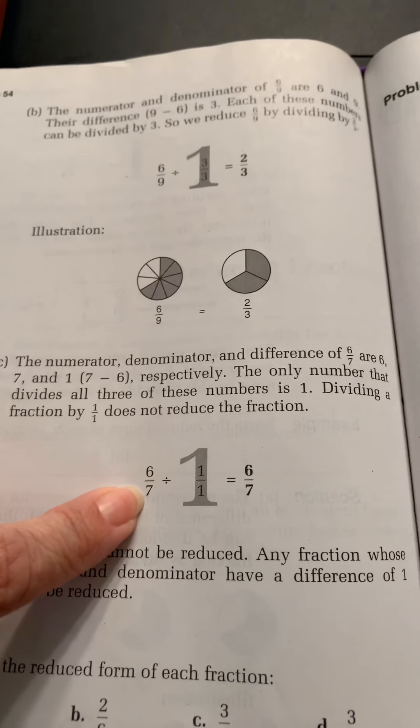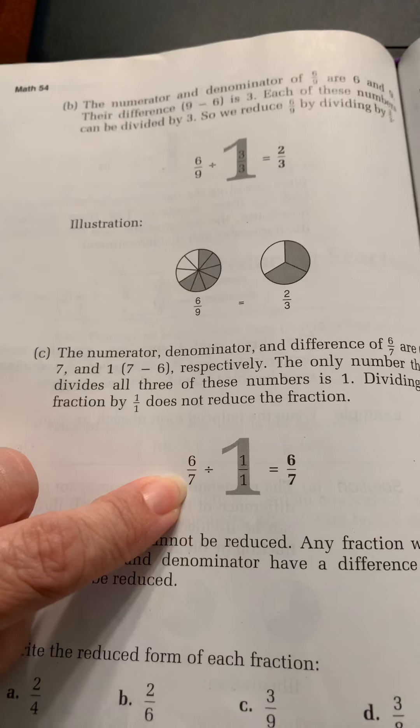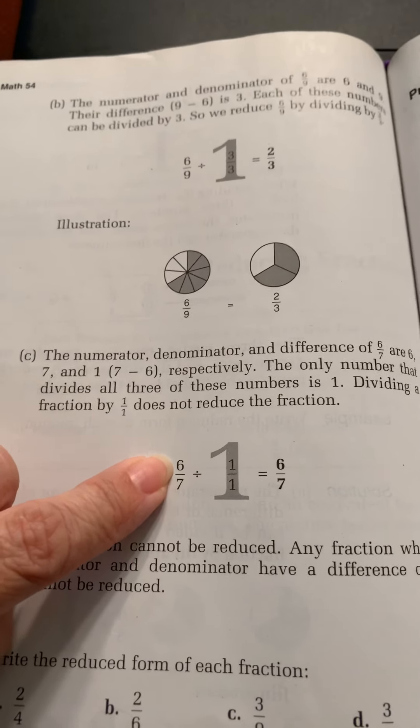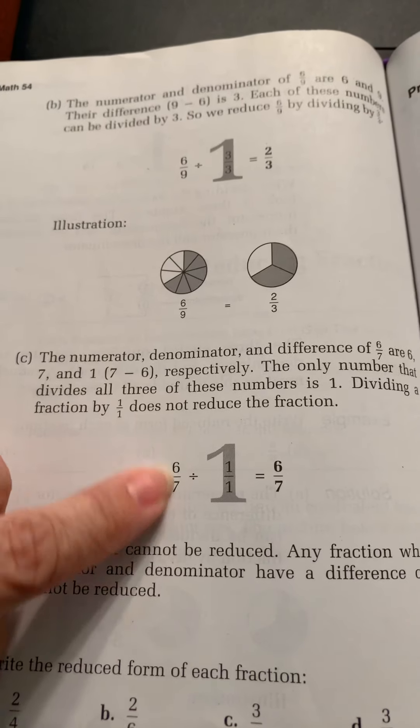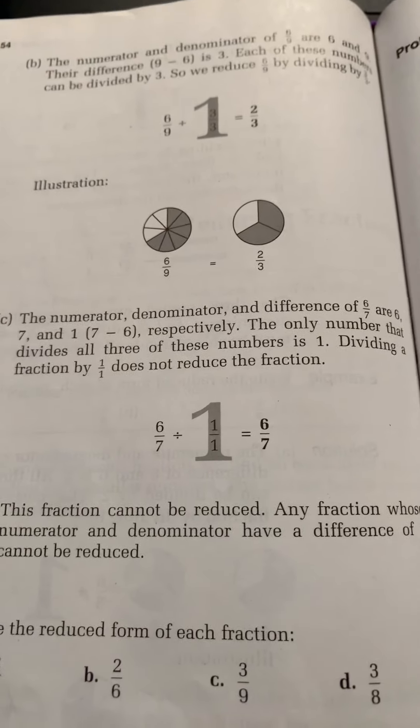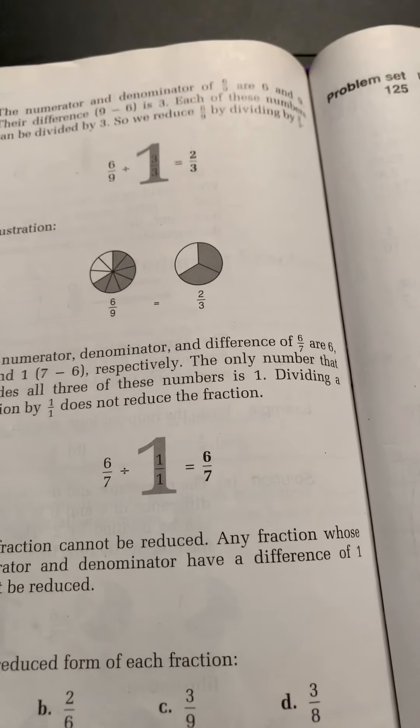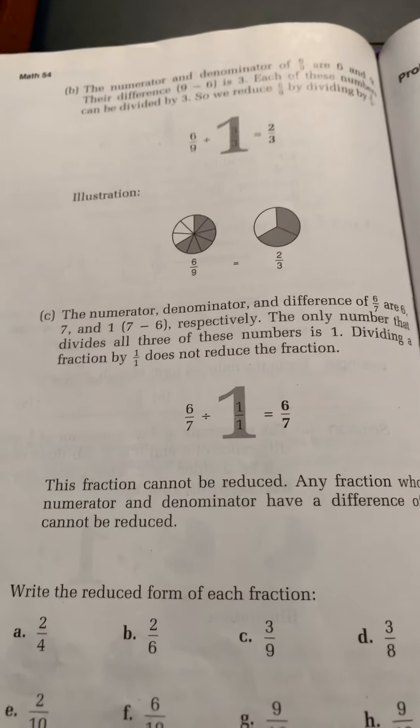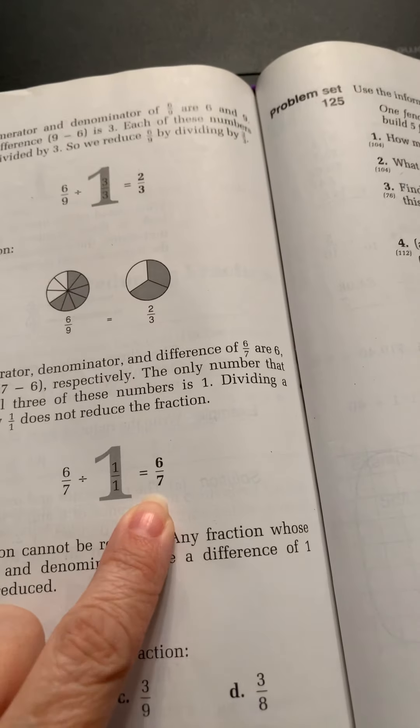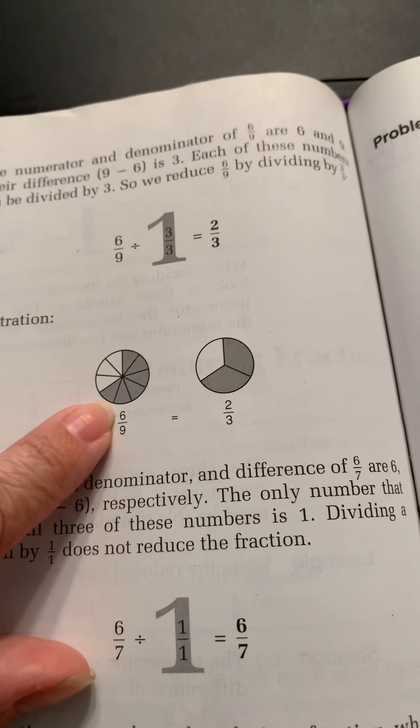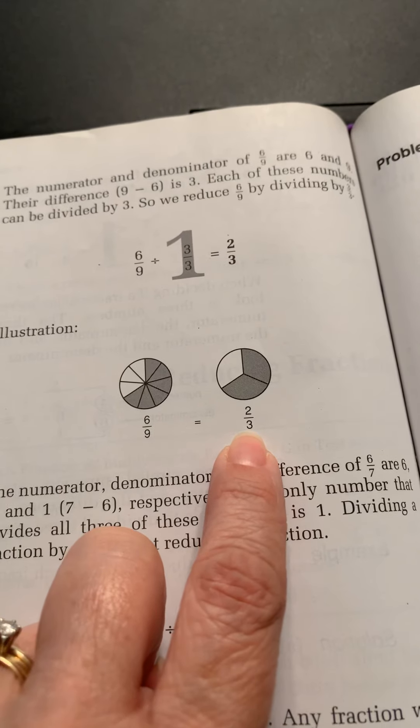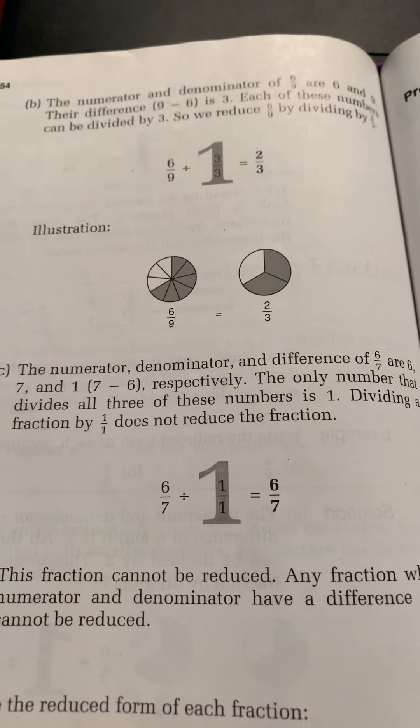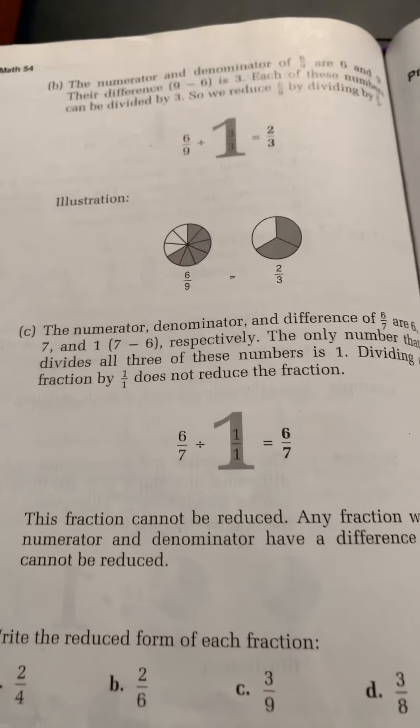So you know that there's not anything that's going to be able to make that number smaller. And even though six is not prime, it doesn't share any factors with seven except one. And so one is the only thing that you can divide both of them by. And so it is reduced as low as it will go. So you cannot make this fraction any smaller. Like you could up here, you could make six-ninths down to two-thirds. You can't make six-sevenths any smaller than that. It can't be reduced anymore.